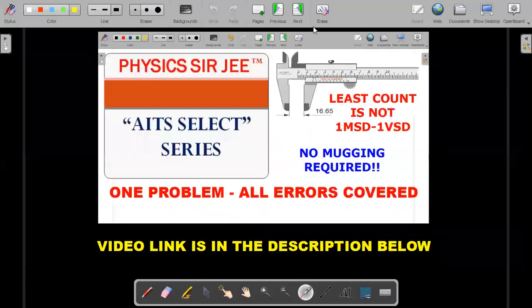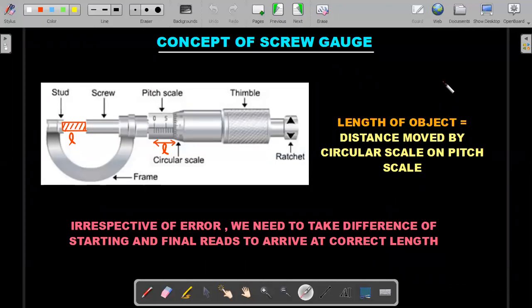Let's move ahead with the solution. First we'll take up the concept. There are two concepts, one for Vernier calipers and one for the screw gauge. Vernier calipers part I'm skipping because I've already done a video on this. The video link of that particular one in the AITS select series is in the description below. If you are new to this channel, it is a very important video that you need to go through. We went through from the basic concepts of how to read a Vernier calipers.